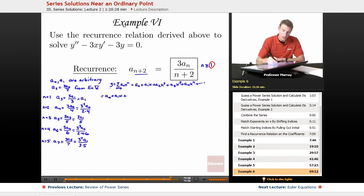A2X squared, now our A2 was 3A0 over 2. Our A3 was A1X cubed. Our A4 was 3 squared A0 over 2 times 4 times 4, our A5 was 3A1, there was an X to the 4th there, plus 3A1 over 3 times 5, X to the 5th.